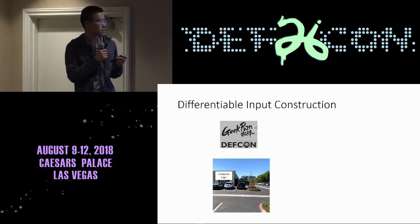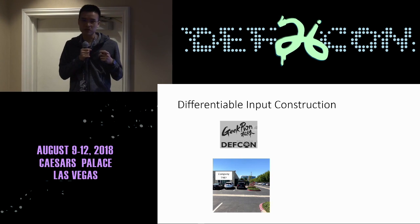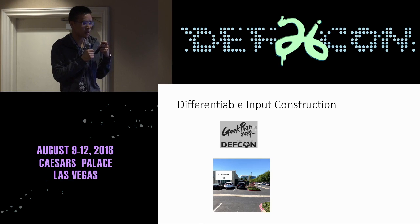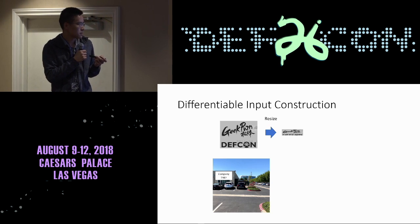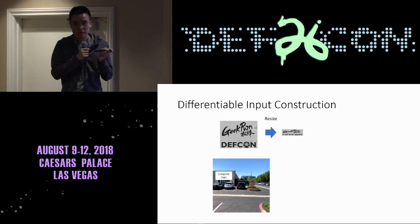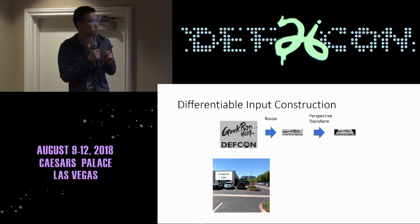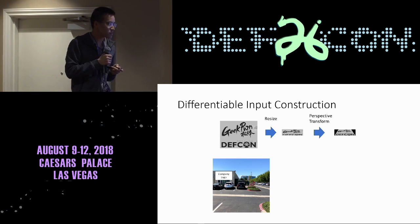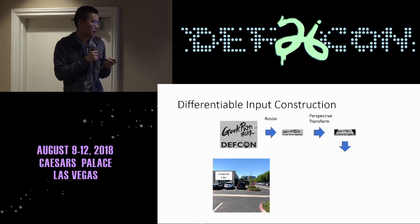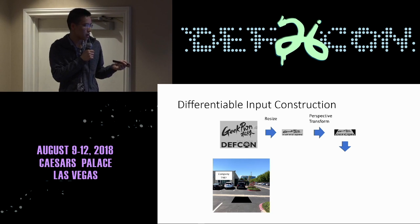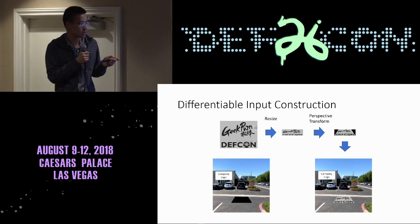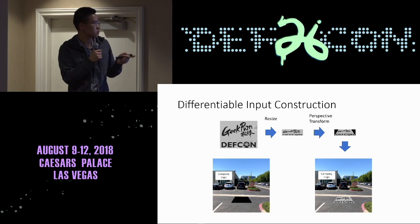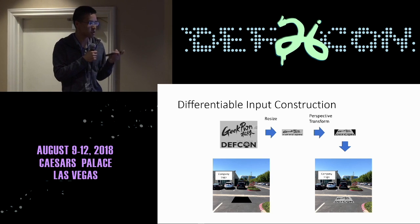I will introduce the stages of this attack. First, we need to implement an input construction pipeline because we need the algorithm to calculate an input that would drive our objective function to the destination we want. We need to resize the picture to a specific size so it could fit the location we want to put it on. Then we do a perspective transformation so we can get a correct viewpoint from the camera. Then we remove the mask pixels of the signature and paste the image patch to that location. The whole pipeline is differentiable so we can directly calculate the image we should have for a successful attack.